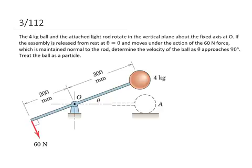For this question we have a 4 kilogram ball and the attached light rod rotating in the vertical plane about the fixed axis O. If the assembly is released from rest at theta equals zero degrees and moves under the action of the 60 Newton force which is maintained normal to the rod, determine the velocity of the ball as theta approaches 90 degrees and we're going to treat the ball as a particle.